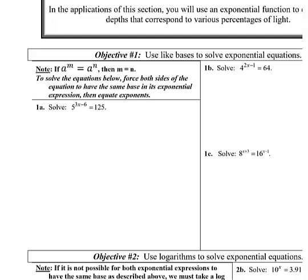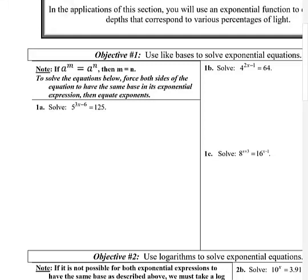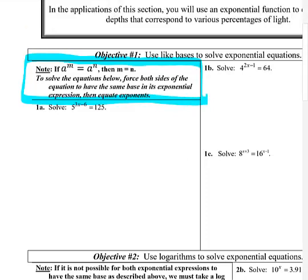If I'm given an exponential equation to solve, I'd think about whether the simple technique is going to work, and if it doesn't, I'll try the more difficult one. The technique is to make both sides of the equation have the same base — like a^m = a^n. If you have the same base on either side, you can just equate their exponents. Force both sides to have the same base in the exponential expression, and then equate exponents.